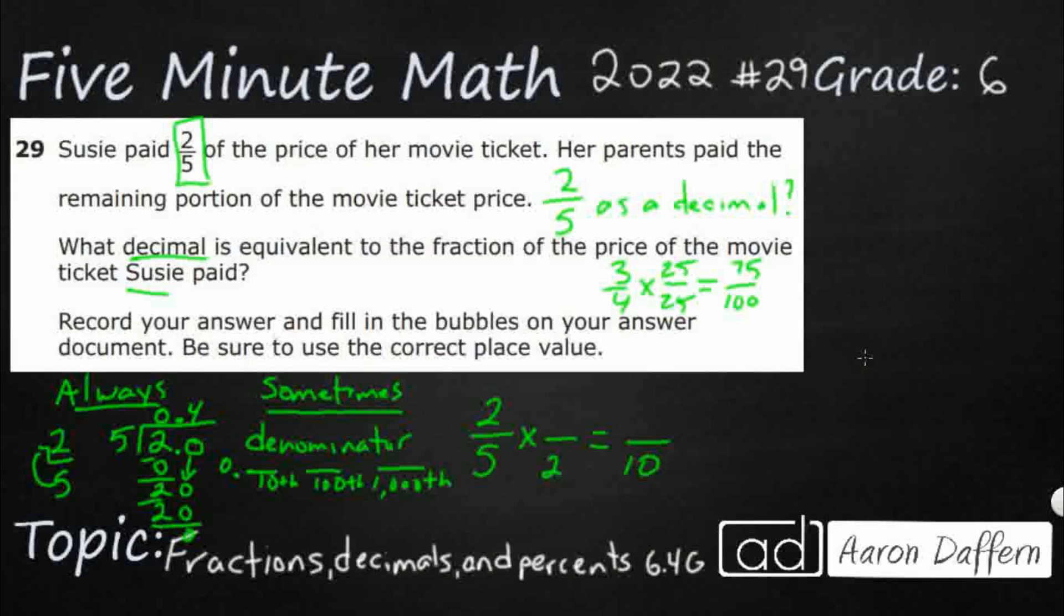So here, yeah, just double it. So 5 times 2 makes 10, 2 times 2 makes 4. So look at this, 4 tenths. And that's why we want the denominator to be 10, 100, or 1,000, because this very first place right here is the tenths place. So those are the magic denominators: 10, 100, or 1,000.